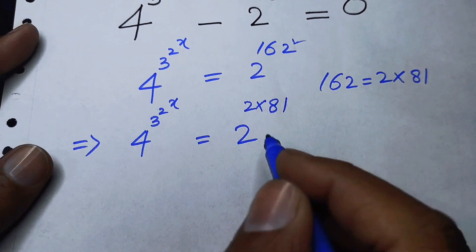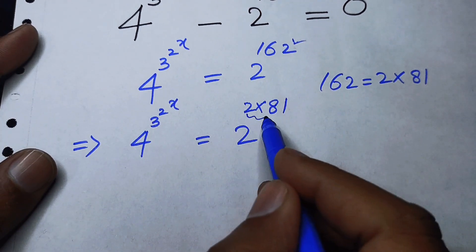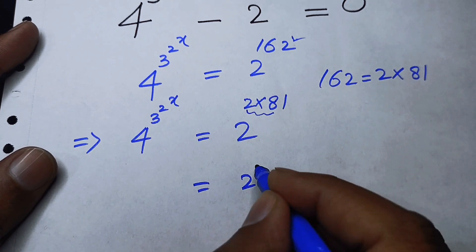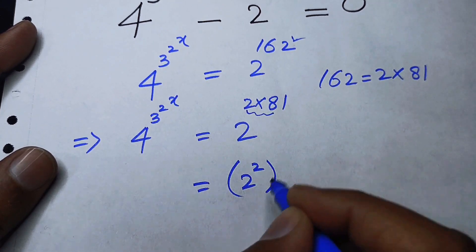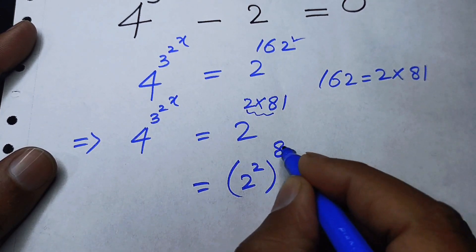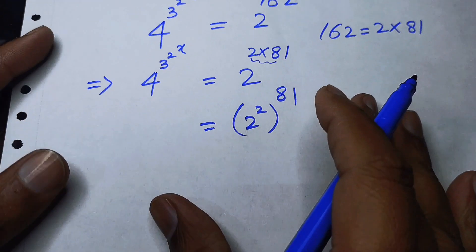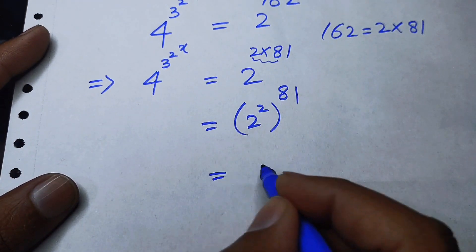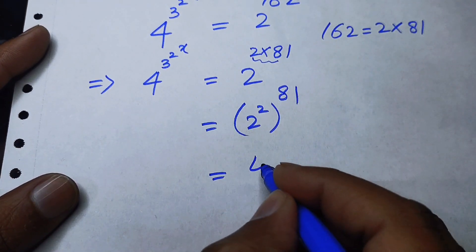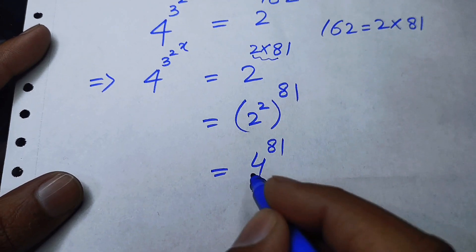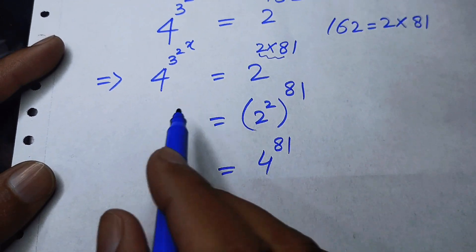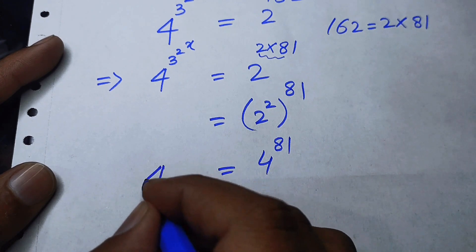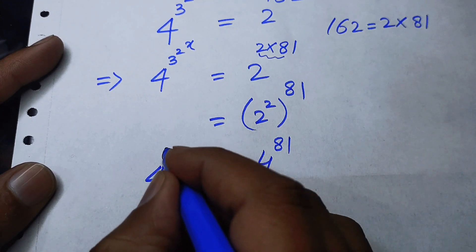Now we focus on the power and write it as 2 to the power of 2, and whole power 81. This gives us 4 to the power of 81 on the right-hand side.